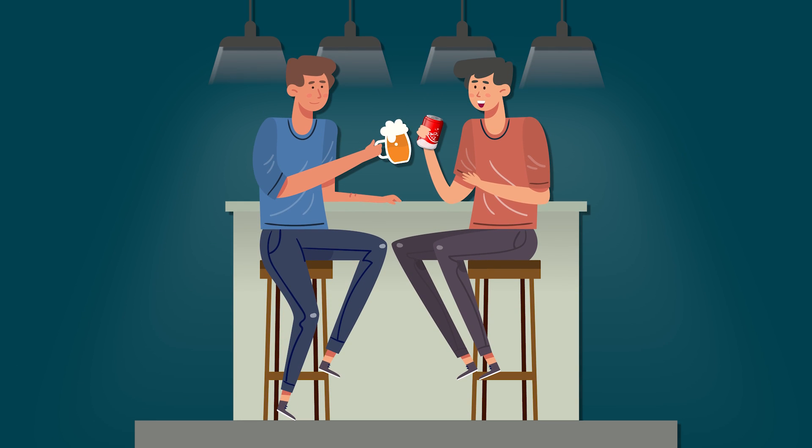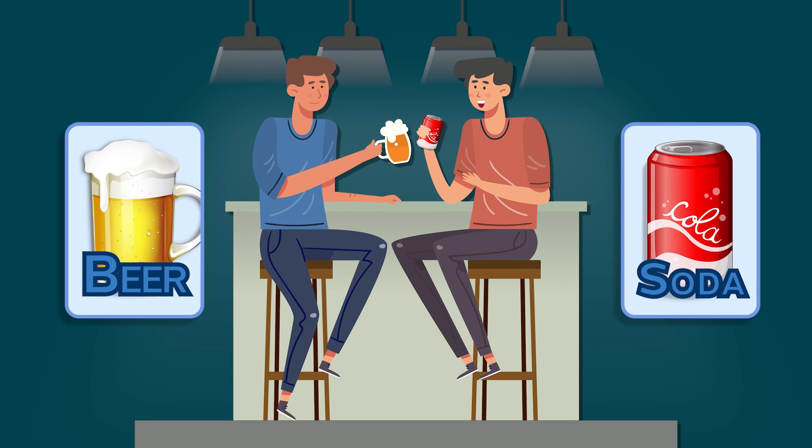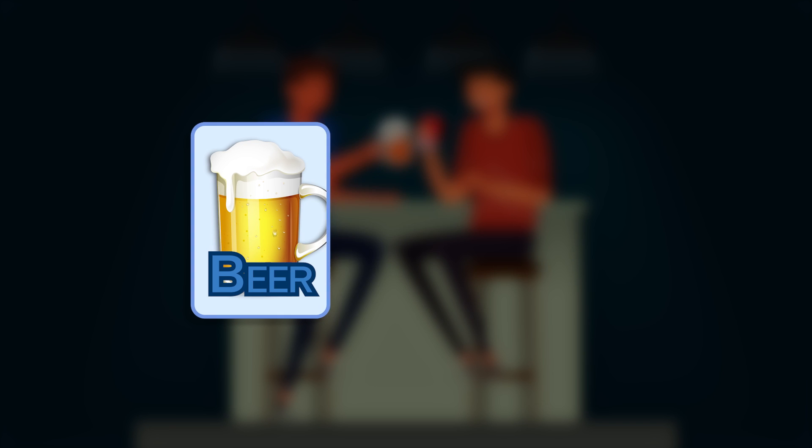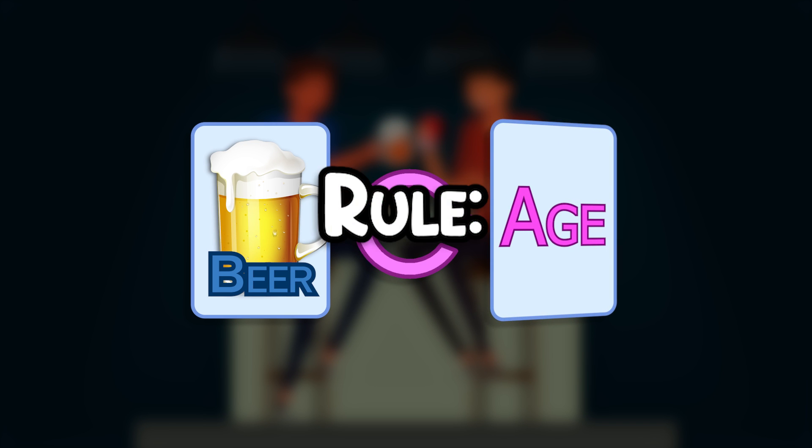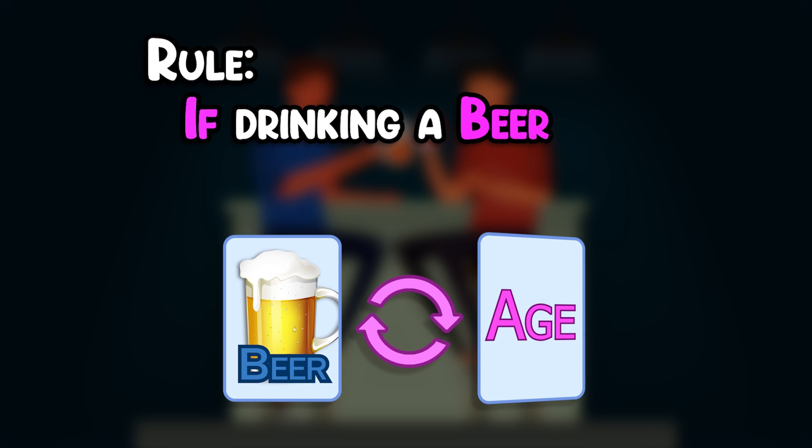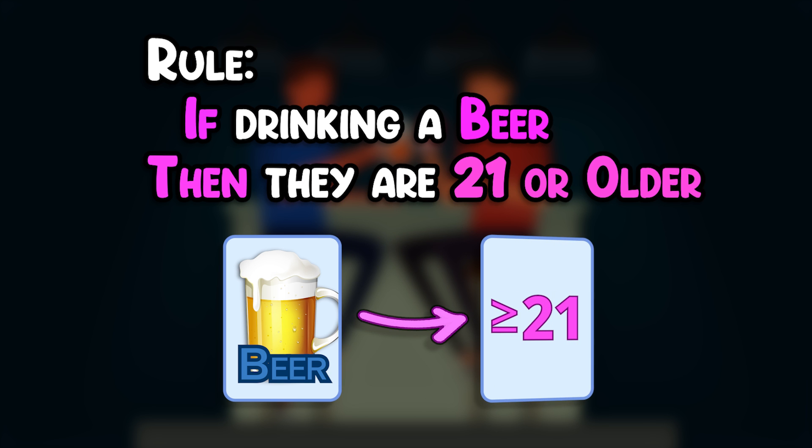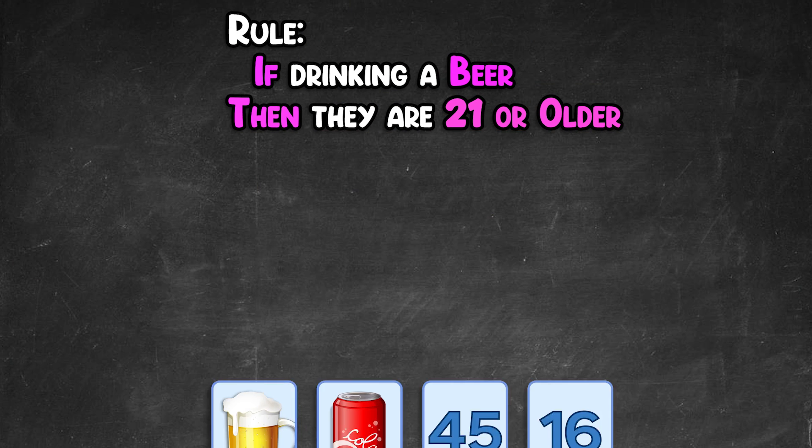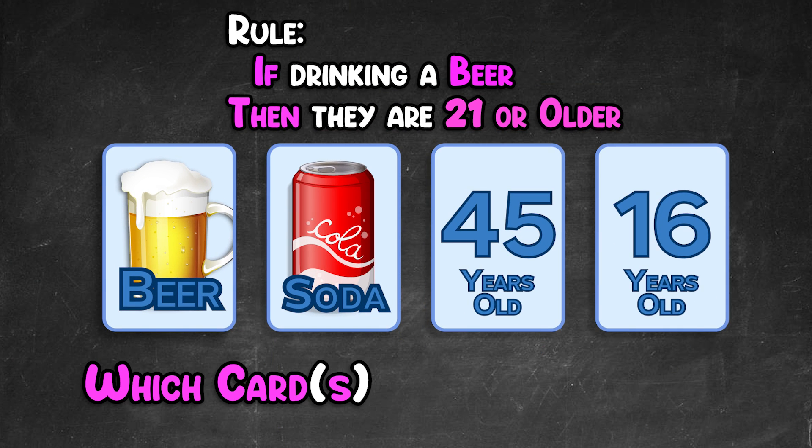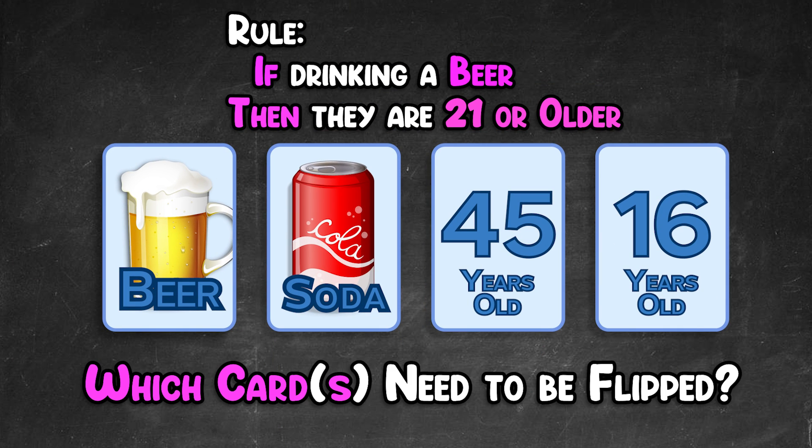Now we'll have each card represent a patron at a bar drinking a beverage, either beer or coke. The other side is the person's age, and the rule is that if the person is drinking a beer, then they are 21 years or older. Now, like before, which are the only cards you need to flip over to verify that everyone is following the rule? Pause the video now if you need more time to figure out the answer.